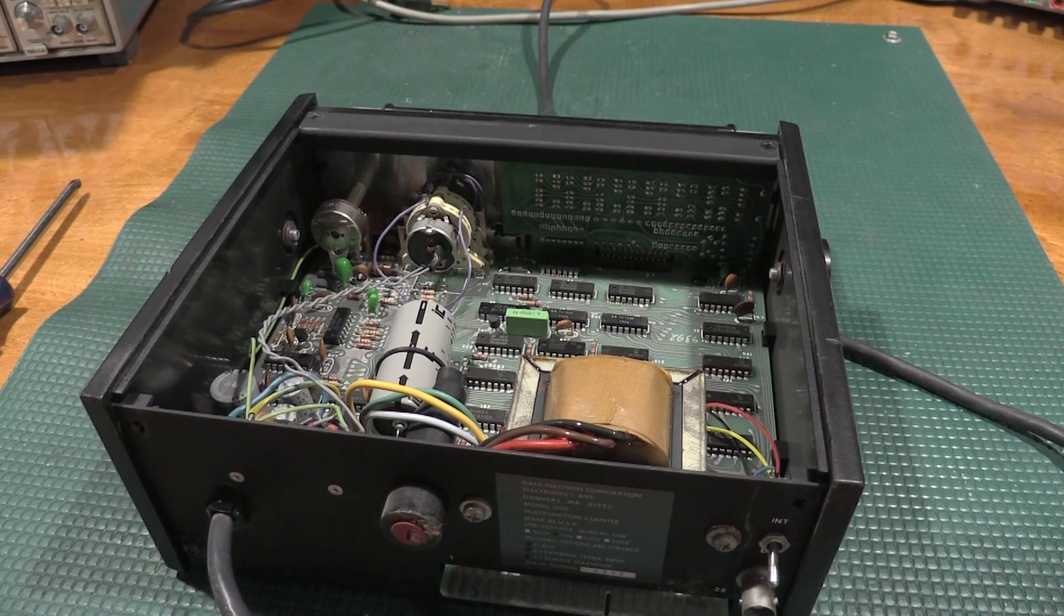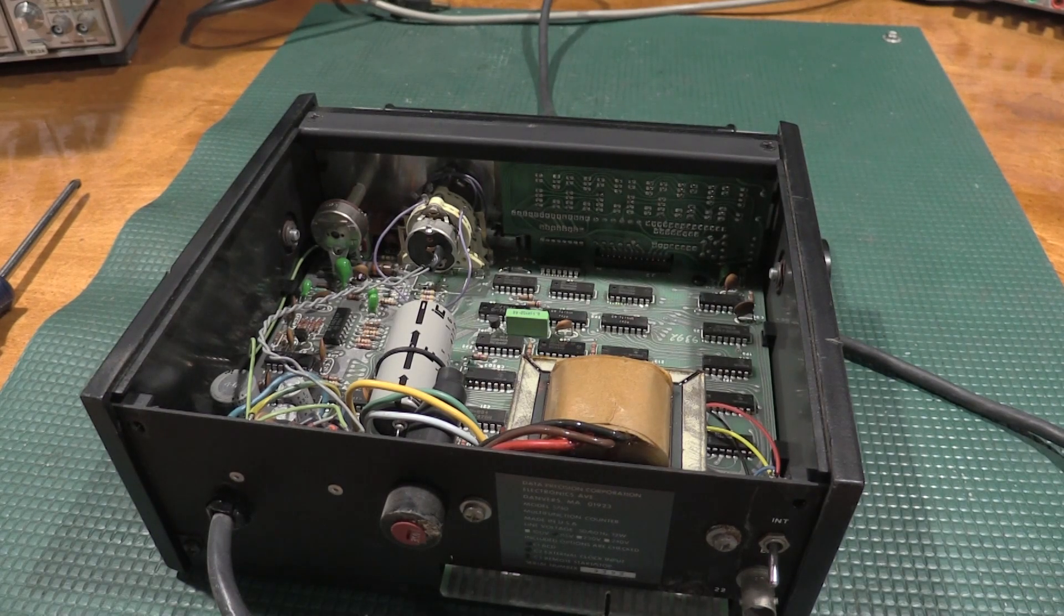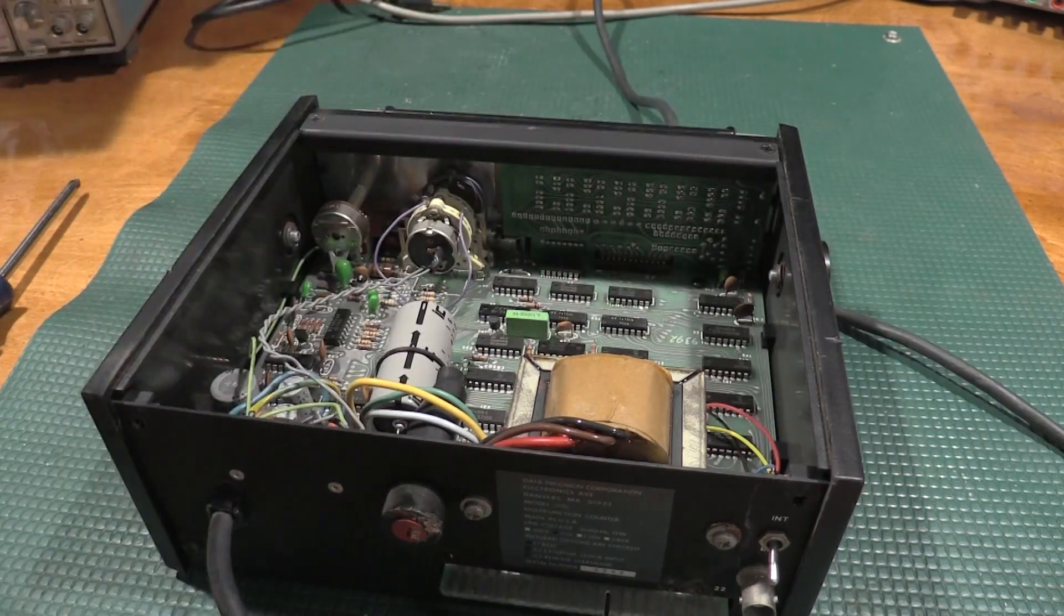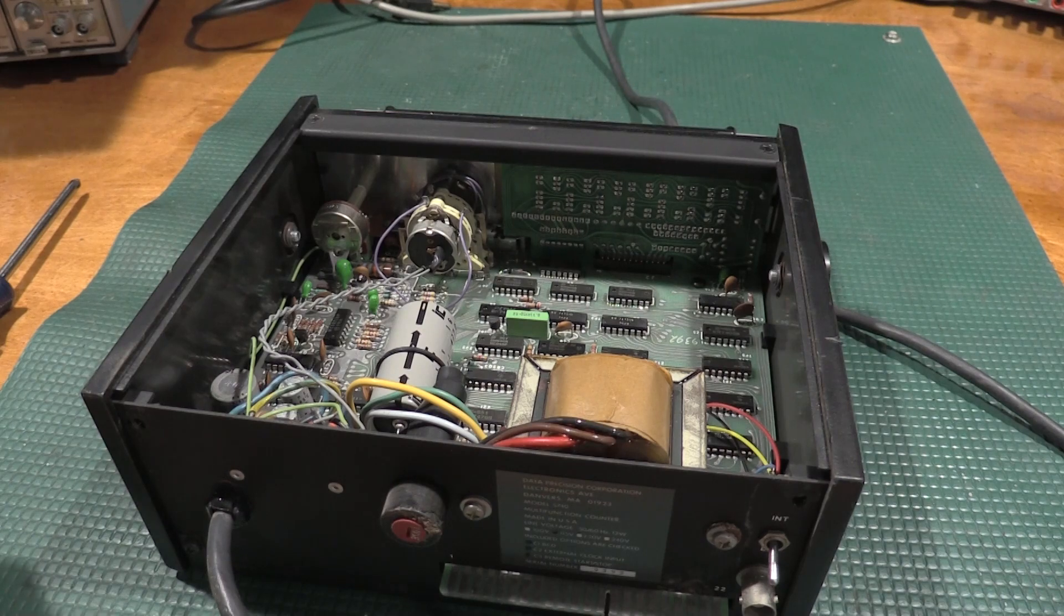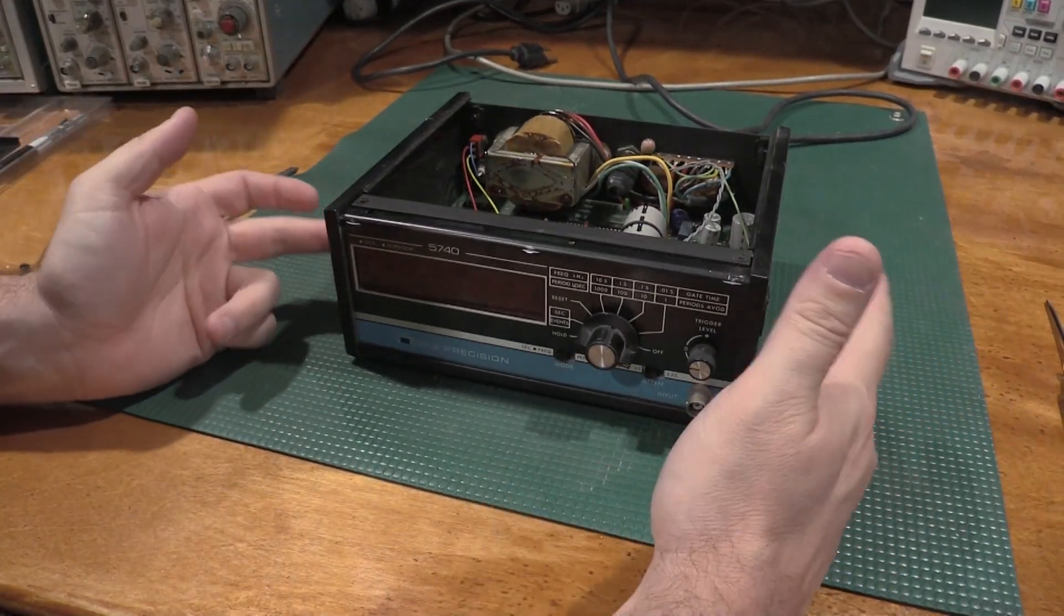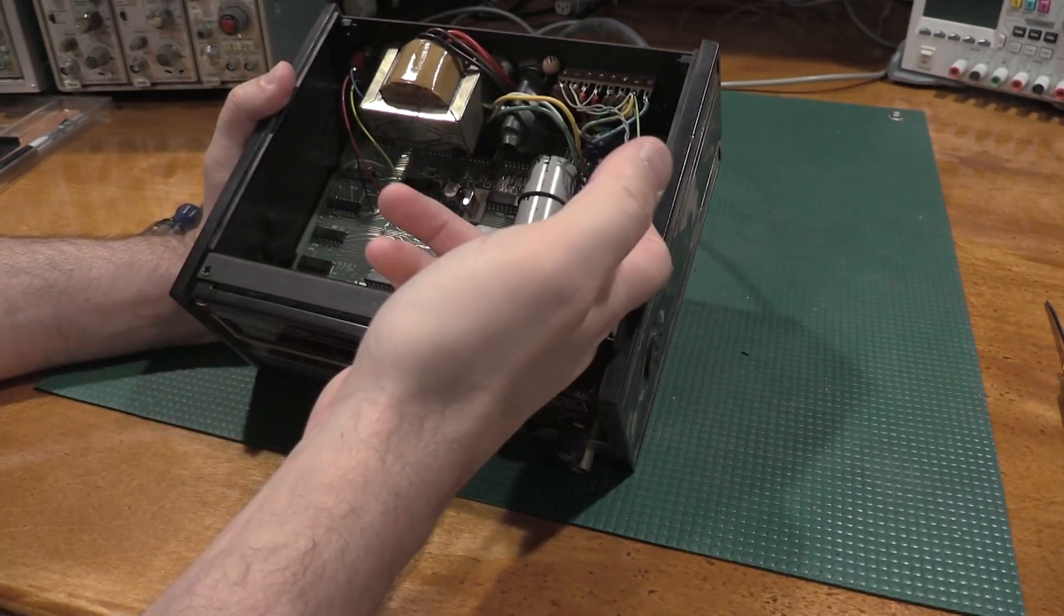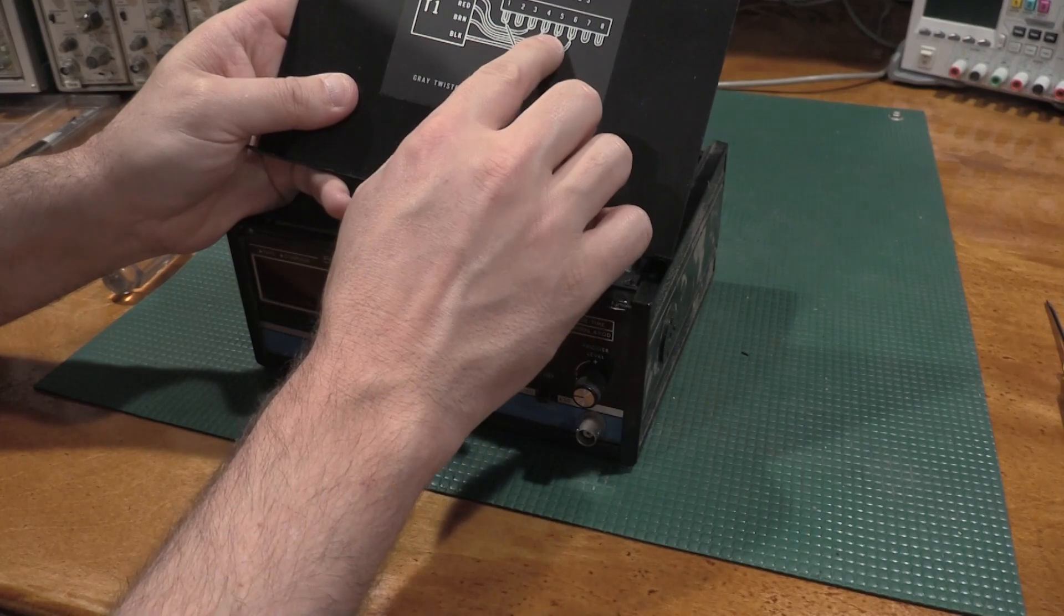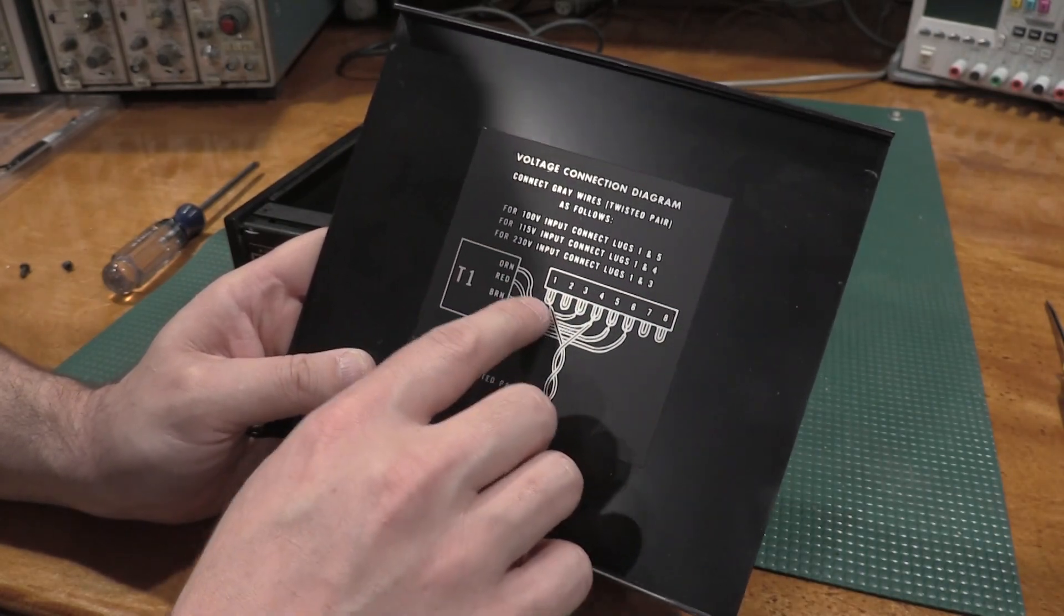Let's see... 74 series logic it looks like. Yeah, 76, 74, 72. Everything looks relatively straightforward. I'm going to pop the handle off of this. The handle was just a bit of C-clips and the whole thing popped off. Power transformer, the operating voltage is set by these two gray twisted wires. On lugs one and four makes it for 115 volt. We have 115 volt, and if we need to do 230, it would be one and three.